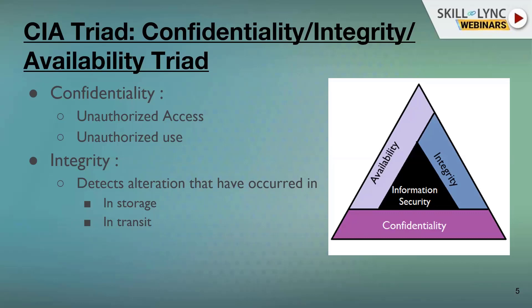Confidentiality means unauthorized access and unauthorized use. Confidentiality is used to prevent the disclosure of information to unauthorized individuals or systems. Organizations maintain confidentiality to safeguard their data. Data has to be kept secret across all teams. The owner of the data has to decide who he or she wants to give access. Only after his or her approval can that data be accessed or data access be given to somebody else. If somebody is not authorized, the owner should not approve that particular data access.